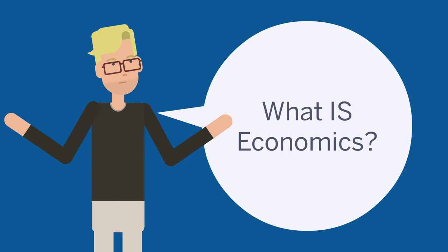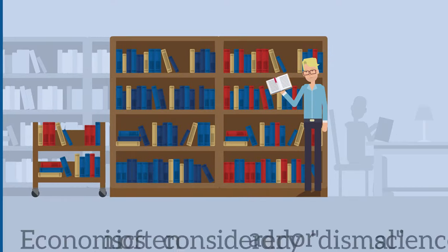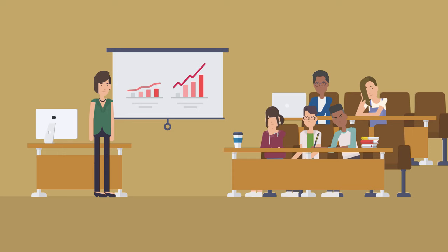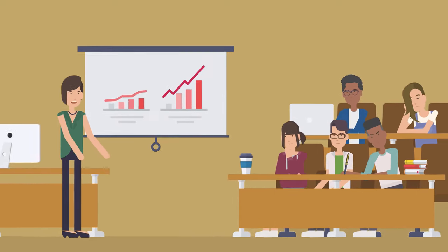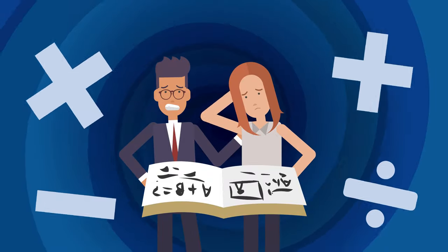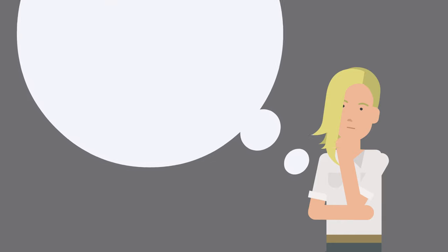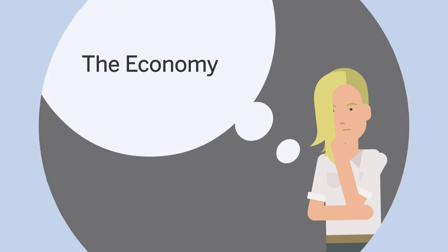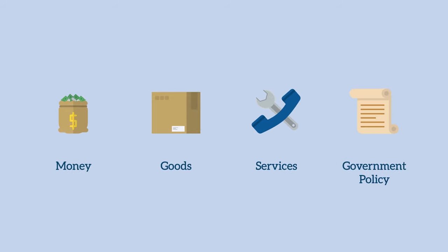What is economics? Economics is often considered a dry or dismal science. In schools, it is often taught with a focus on abstract supply and demand charts or complicated mathematical formulas. When we think about economics or the economy, we think about money, goods or services, or perhaps government policy.